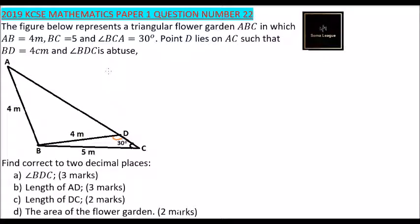For us to do that, we can say 4 over sine 30 is the same as 5 over sine D. We can now get sine D equals 5 times sine 30 divided by 4, which when you work out, you'll get 0.6250.